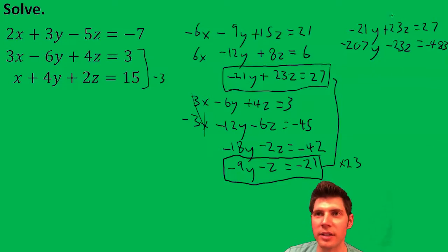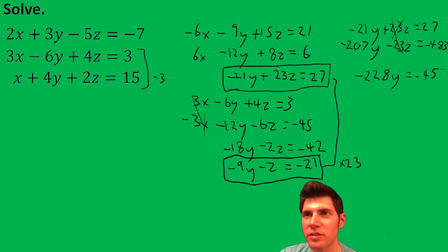Now I add these. The z's cancel. This is negative 228y equals... And then when I add these two, I get negative 456. And I divide both sides by negative 228. I get y equals 2.